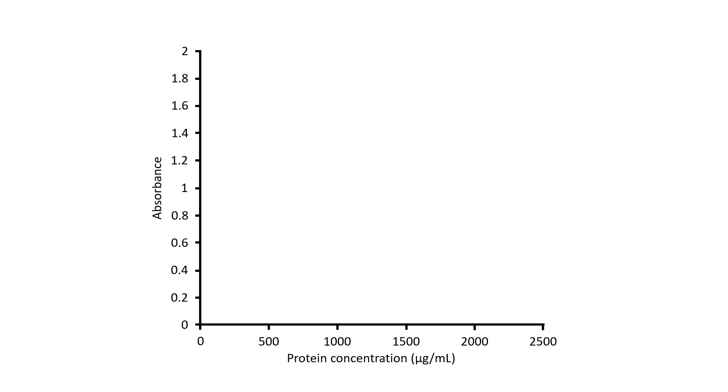Now I have 9 standards in my standard curve. The largest standard had a known concentration of 2000 micrograms per milliliter and when I measured this on the plate reader it had an absorbance value of 1.95. So this standard will be around here on my graph.